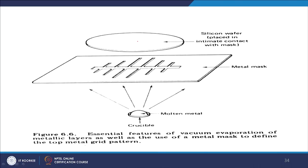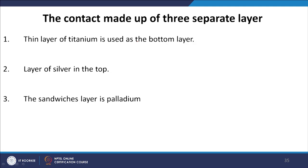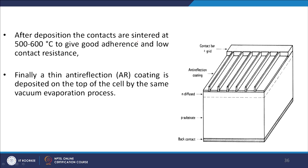This vacuum evaporation technique is also used for organic solar cells and perovskite solar cells. The contact consists of three separate layers: titanium as the bottom layer, palladium as the sandwich layer, and silver as the top layer. After deposition, the contacts are sintered at 500–600°C to give good adhesion and low contact resistance.